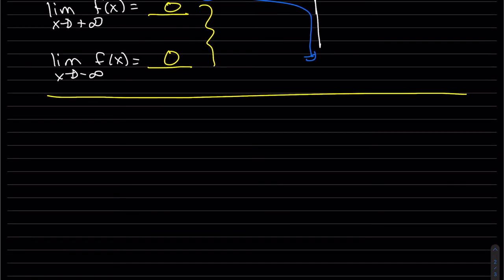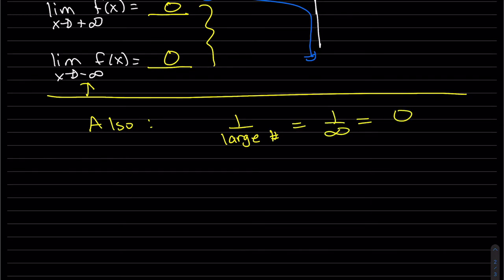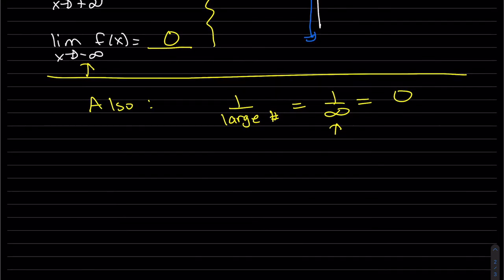Here's probably the concept that's helped most students. When you have one over a very large number, we're going to get zero — one divided among an infinite number of pieces is zero each. Also, one over zero from the previous video gave us positive infinity or negative infinity. So: one over infinity approaches zero, and one over zero approaches infinity or negative infinity.